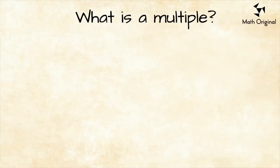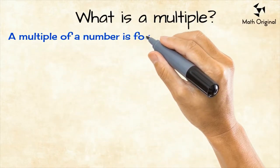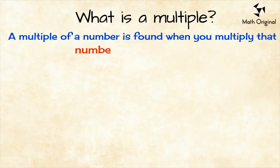So, what is a multiple? A multiple of a number is a number that is found when you multiply that number by a positive integer.